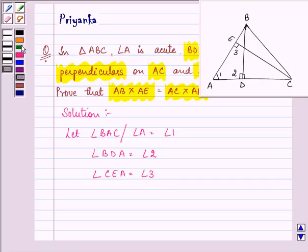Now, here in this question, we are given that in triangle ABC, BD is perpendicular on AC and CE is perpendicular on AB.